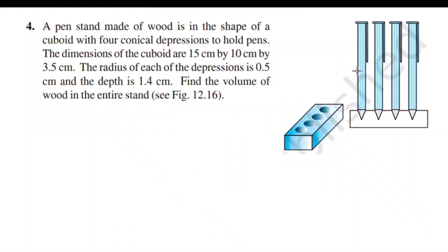We are going to do exercise 12.2, question number 4. A pen stand made of wood is in the shape of a cuboid with four conical depressions to hold pens.